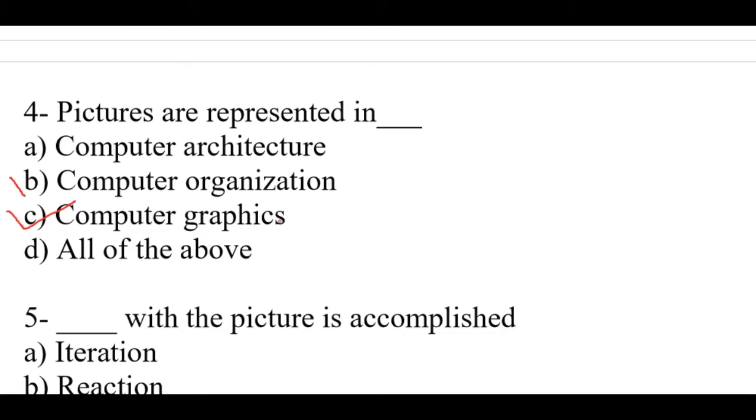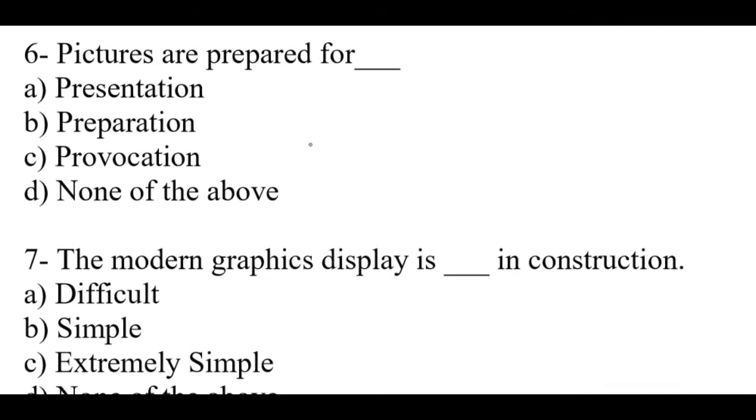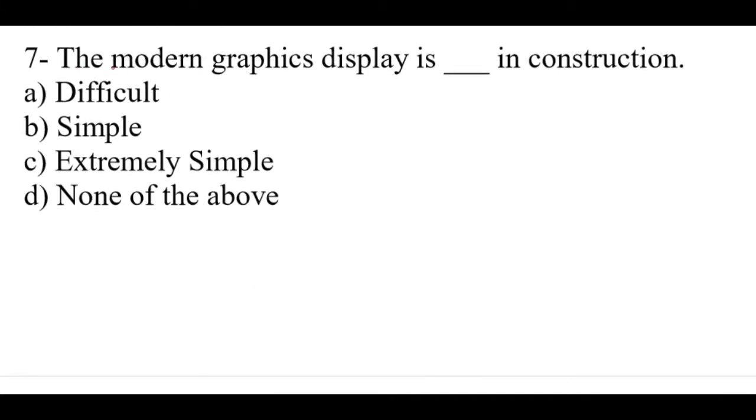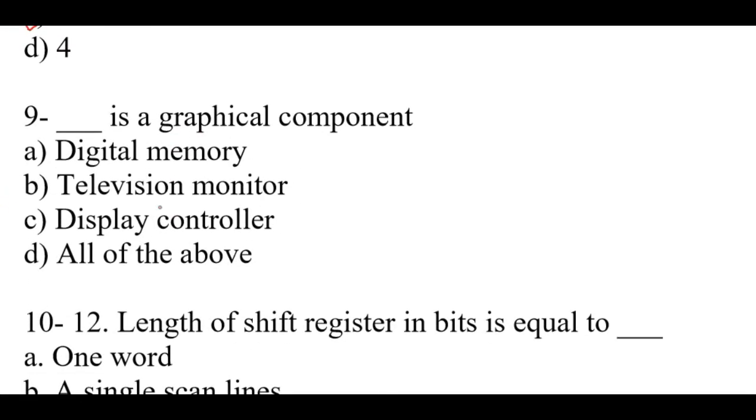Question number 4: Pictures are represented in dash. Right option is C, computer graphics. Question number 5: Dash with the picture is accomplished. Right option is C, interaction. Question number 6: Pictures are represented for dash. Right option is A, presentation. Question number 7: The modern graphics displays is dash in construction. Right option is C, extremely simple. Question number 8: Modern graphics consists of dash components. Right option is C, three. Question number 9: Dash is a graphical component. Right option is D, all of the above - the digital memory, television monitor, display controller.